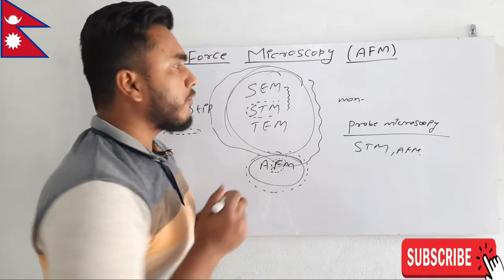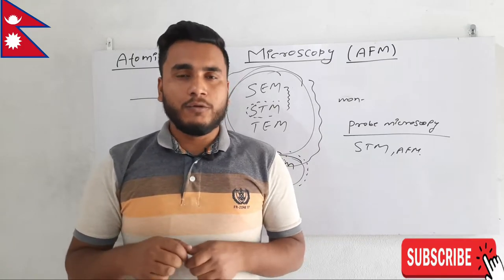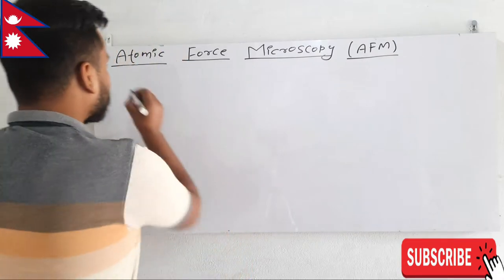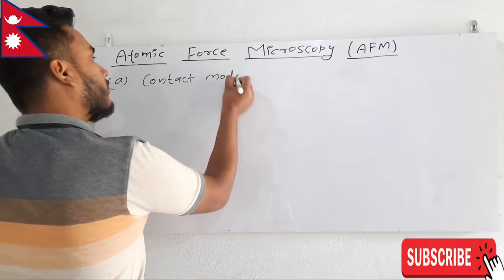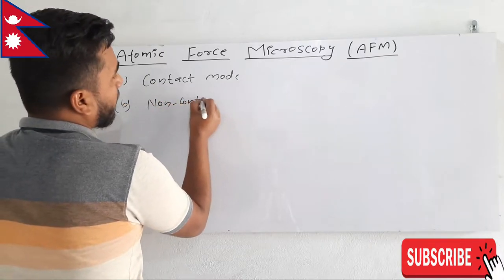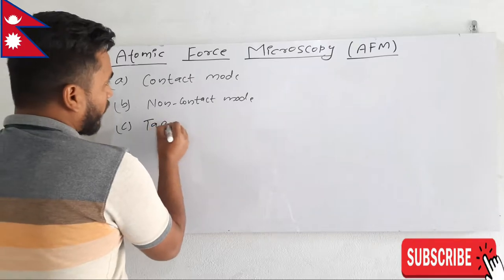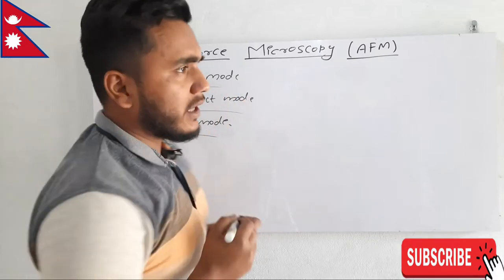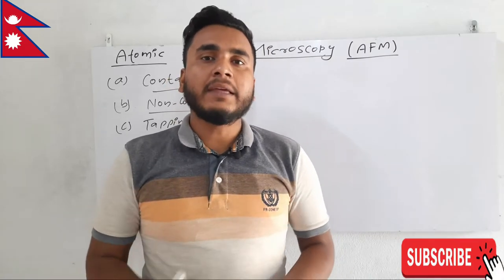So, what actually happens in atomic force microscopy and what are its modes? Atomic force microscopy can be operated in three different modes: A — contact mode, B — non-contact mode, and C — tapping mode. Let us understand that by making a figure.